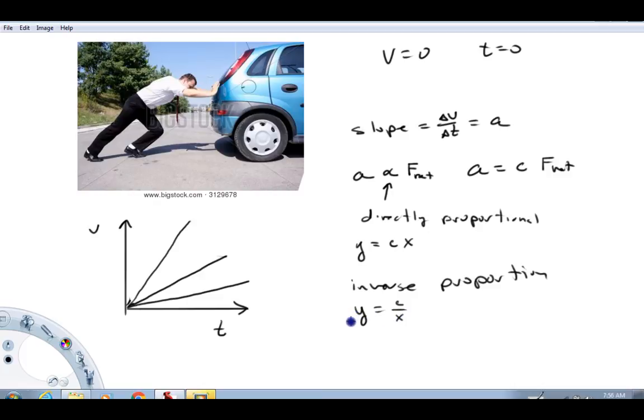So if y varies inversely with x that means y equals a constant over x. That means that when x gets bigger y gets smaller. So in Newton's second law the acceleration is inversely proportional to the mass or we would say it's proportional to 1 over m. This right here is Newton's second law of motion and what it says is that the acceleration is directly proportional to the force and inversely proportional to the mass.